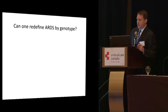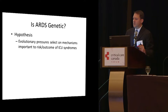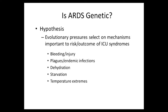Can we redefine ARDS by genotype? Can we identify genetic endotypes of ARDS? The first question is: is ARDS genetic? The hypothesis that evolutionary pressures select on mechanisms important to risks and outcomes of ICU syndromes is well supported by evolutionary biology. I view my ICU as an intense microcosm of everything that affected natural selection. As a species, we evolved to survive bleeding, plagues, dehydration, starvation, and temperature extremes.